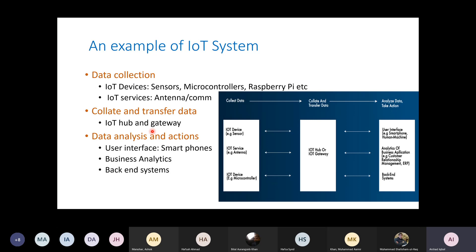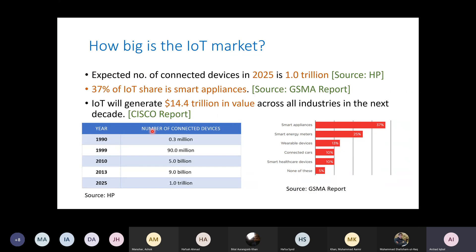The collate and transfer data section is the IoT hub and gateway, which provide a mechanism to connect the user interface and the IoT network. Data analysis provides a user interface, business analytics about the installed network, and backend systems. So how big is the IoT market?